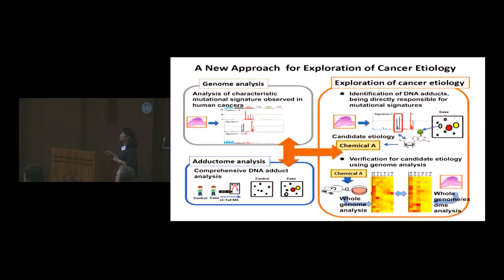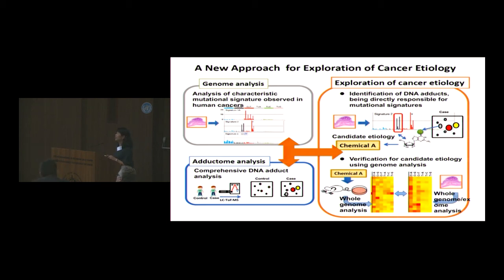I would like to propose a new approach for the exploration of cancer etiology, in which genome analysis and adductome analysis are fused together. DNA adduct identification is performed by adductome analysis, followed by verification of the candidate etiology using genomic analysis. By using this new combined approach, it is expected that currently unknown human cancer etiologies could be explored in the near future.